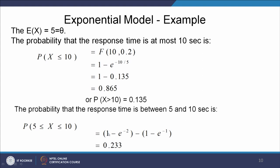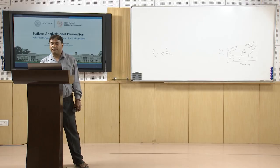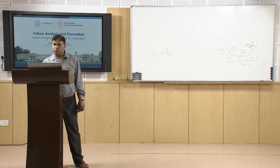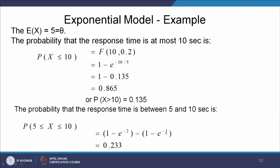For the probability that response time falls between 5 and 10 seconds, we calculate the probability for 10 seconds minus the probability for 5 seconds. This gives us (1 minus e raised to the power minus 2) minus (1 minus e raised to the power minus 1), where minus 2 comes from 10 divided by 5 and minus 1 comes from 5 divided by 5. On calculation, the probability that response time is between 5 and 10 seconds comes out to 0.233.